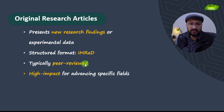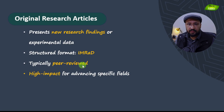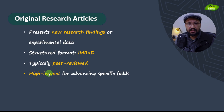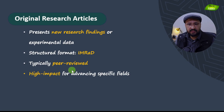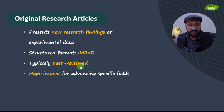Original research articles are peer-reviewed, meaning you write the article, send it to a journal, and it is reviewed by an expert in that area. Based on their feedback, the article will either be published, rejected, or receive minor or major revisions. These articles have very high impact in their field and can take the field to the next level.